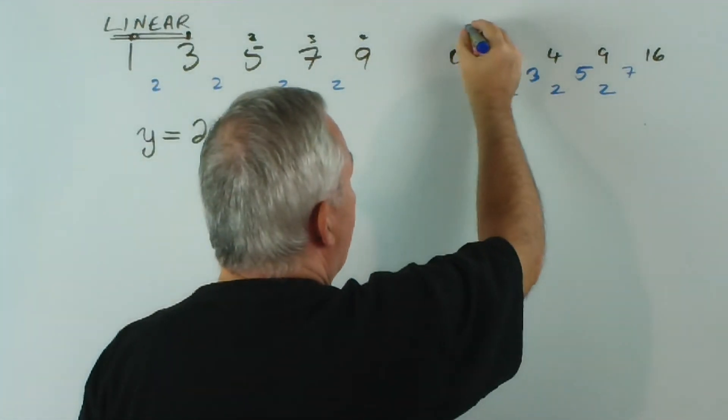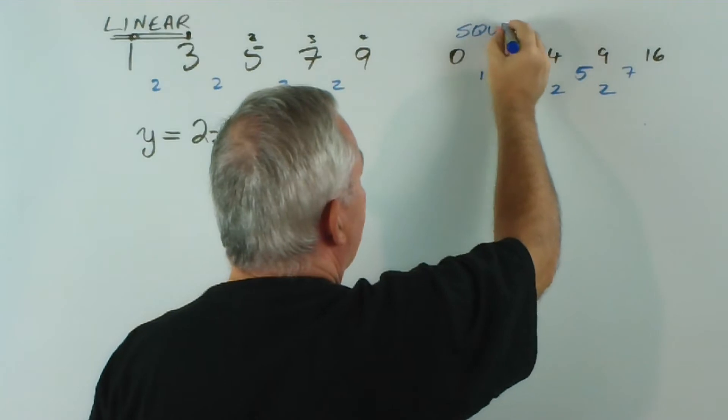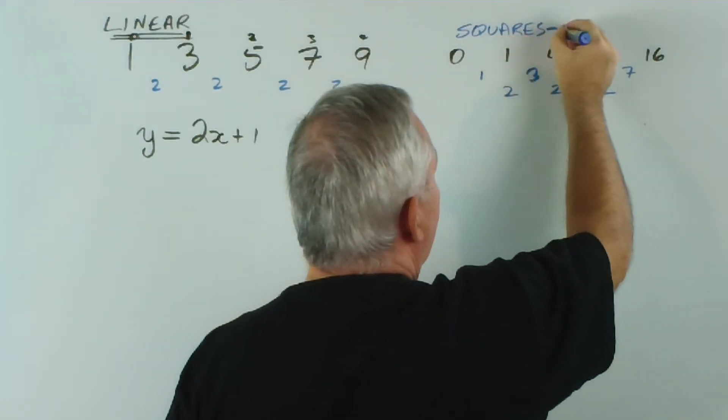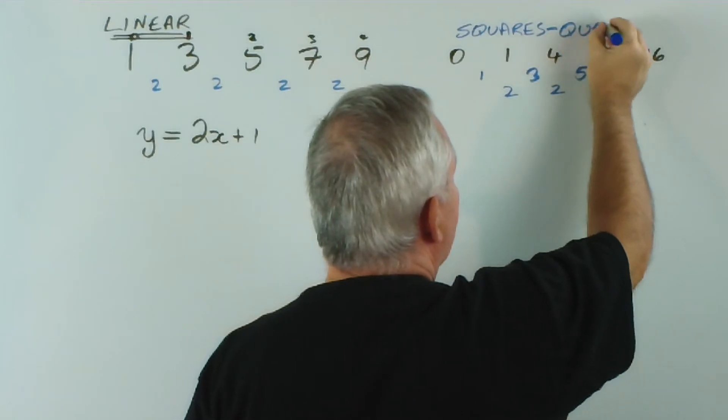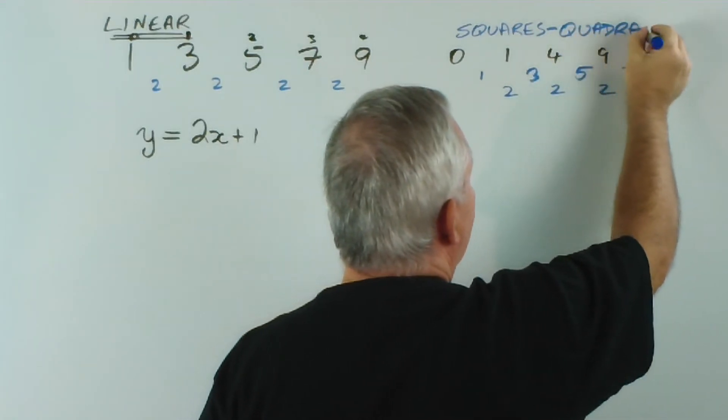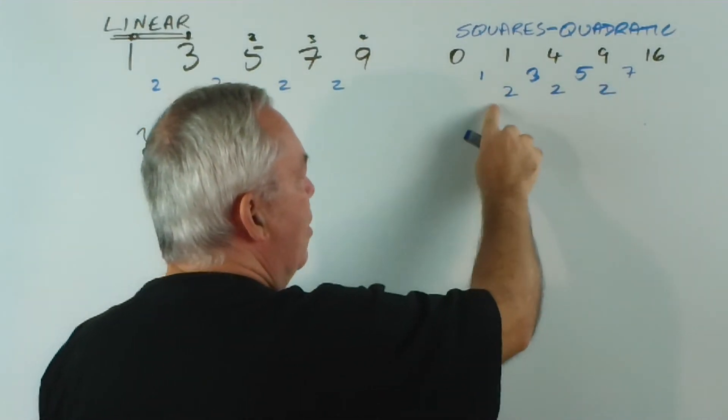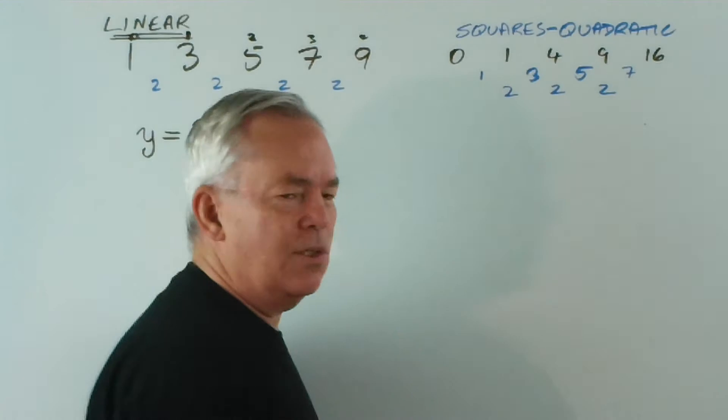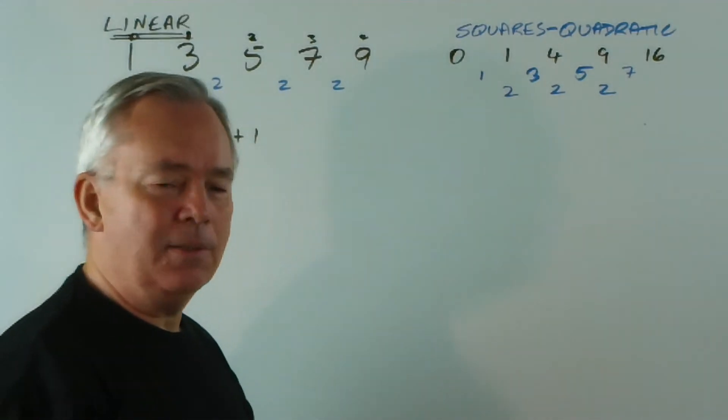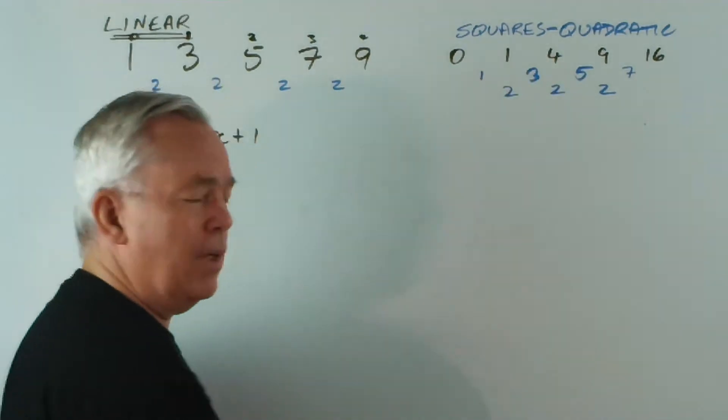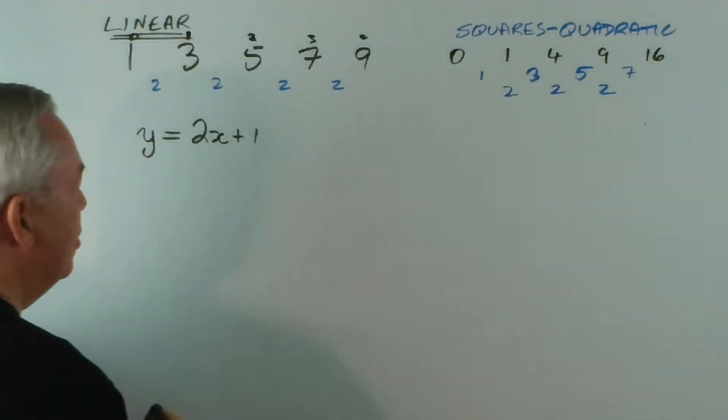In fact, we've reproduced this pattern on the second and third lines here. So, when we have squares, or if you like, quadratic equations, and we look at the differences between them, they always have a consistent pattern on the second line down. First line for linear, second line for quadratics.